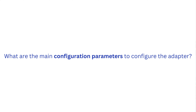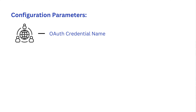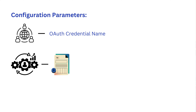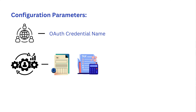Let's talk about the parameters you need to configure in the Elster adapter. In the connections parameter, you need to mention the OAuth credential name. In the processing section, you need to indicate what kind of tax documentation operation you're trying to perform. You need to specify the operation, which is the type of tax document operation to be performed with the Elster server.